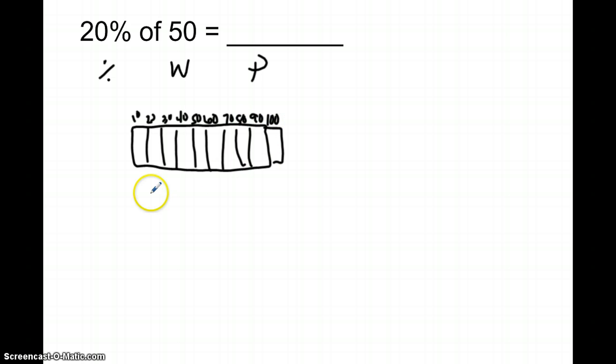A tape diagram is nice because it really is just looking at the equal parts. So this says 20% of a number is 50. If we have $50 in our savings account and you get 20% of it, how much do you get? So we know the whole amount is 50, so the whole entire tape diagram is worth 50.